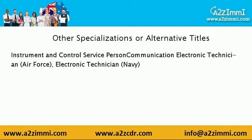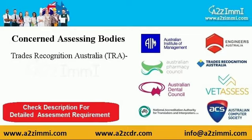The other designations through which you can apply under this unit code are: instrument and control service person, communication electronic technician, and air force electronic technician Navy. To file for general skilled migration under the profile of an electronic instrument trades worker general,